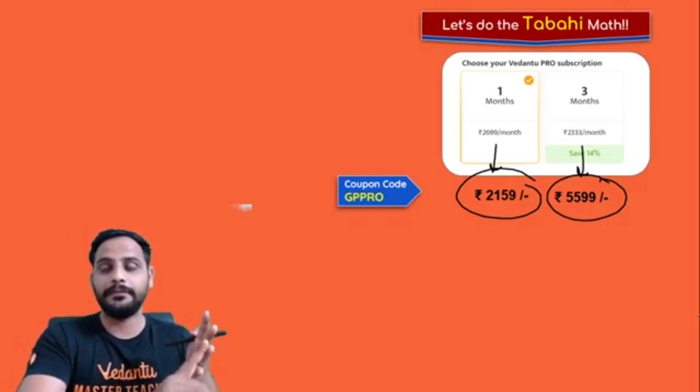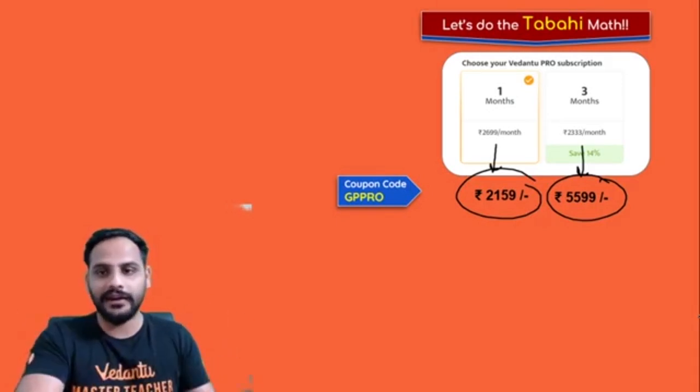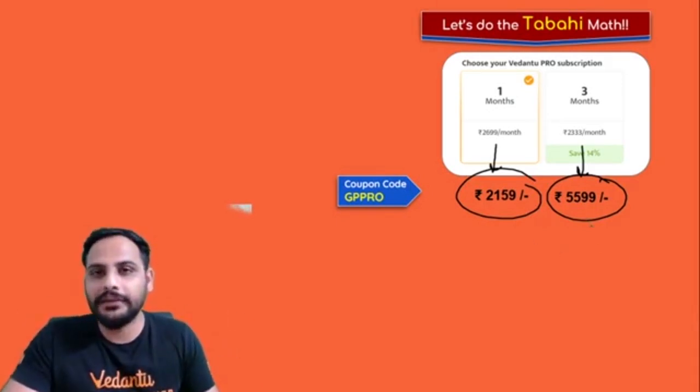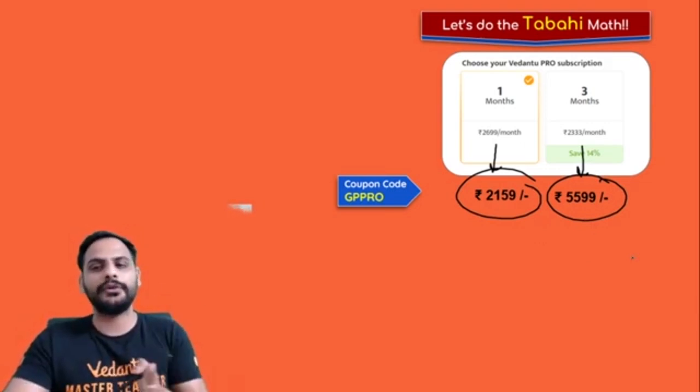Maths, Physics, Chemistry, Biology, SST, English. So price per subject becomes very less. Also, when you take it for 3 months, the price per month also reduces.